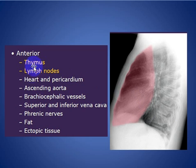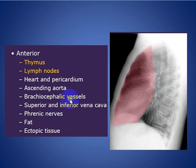The anterior mediastinum contains the thymus, lymph nodes, heart, pericardium, ascending aorta, vessels, some nerves, and fat.